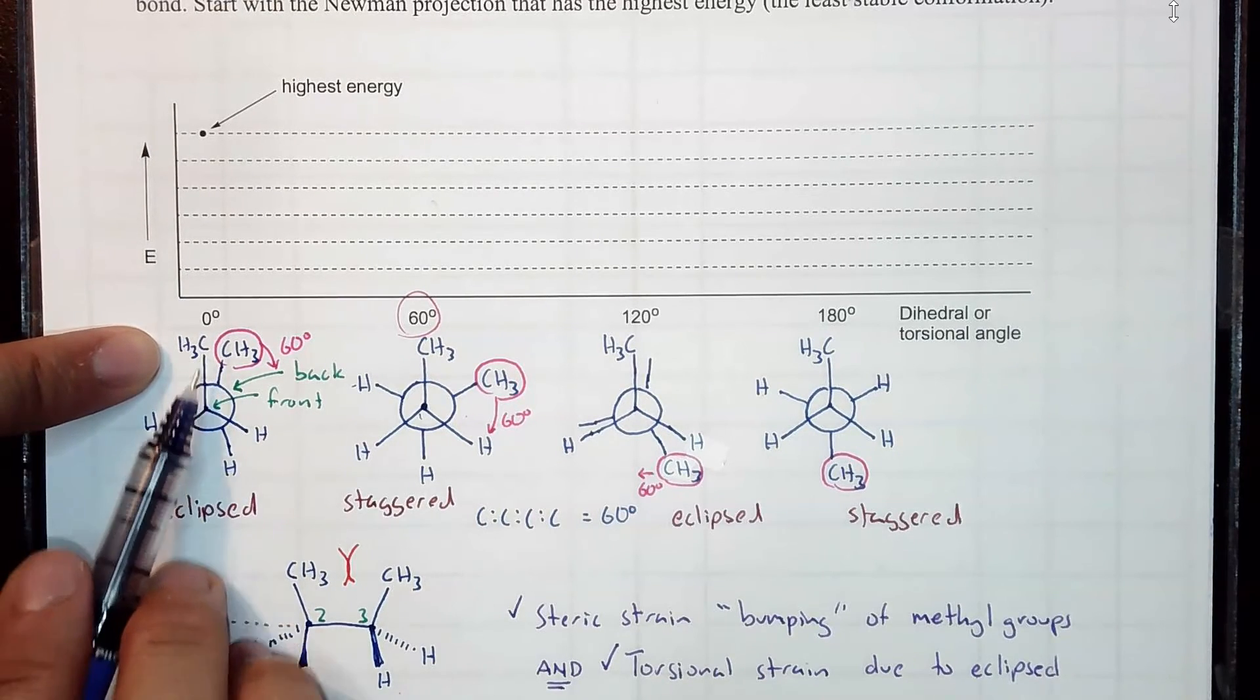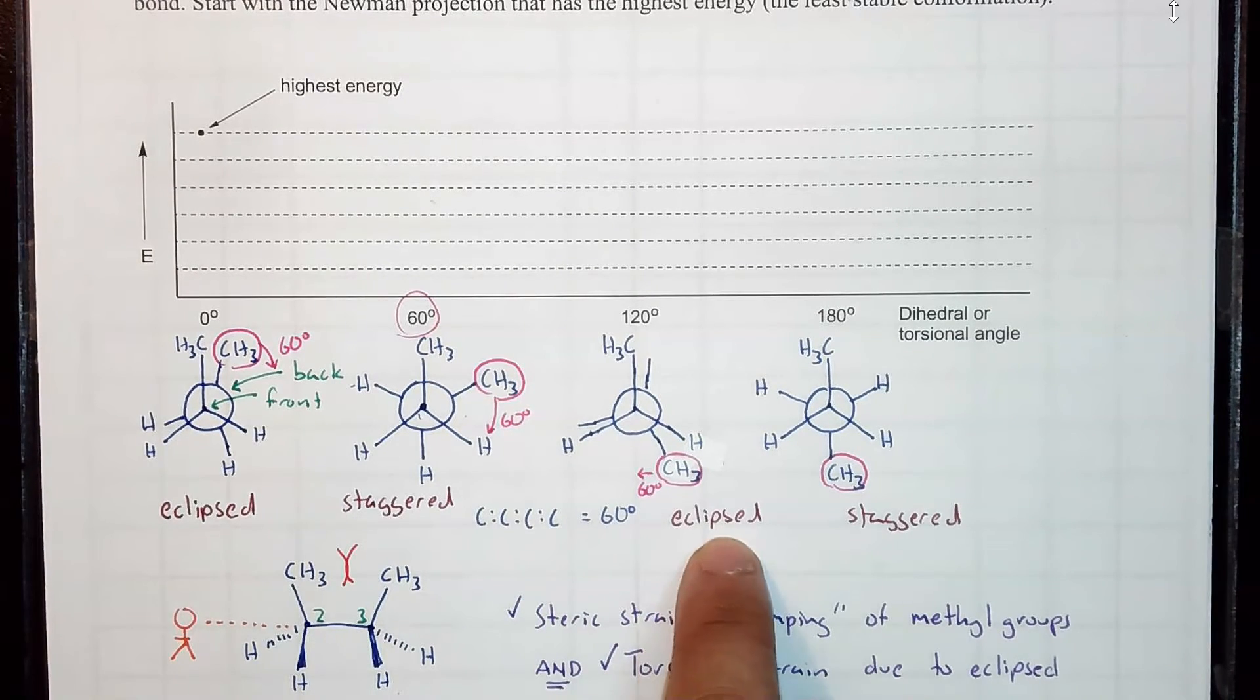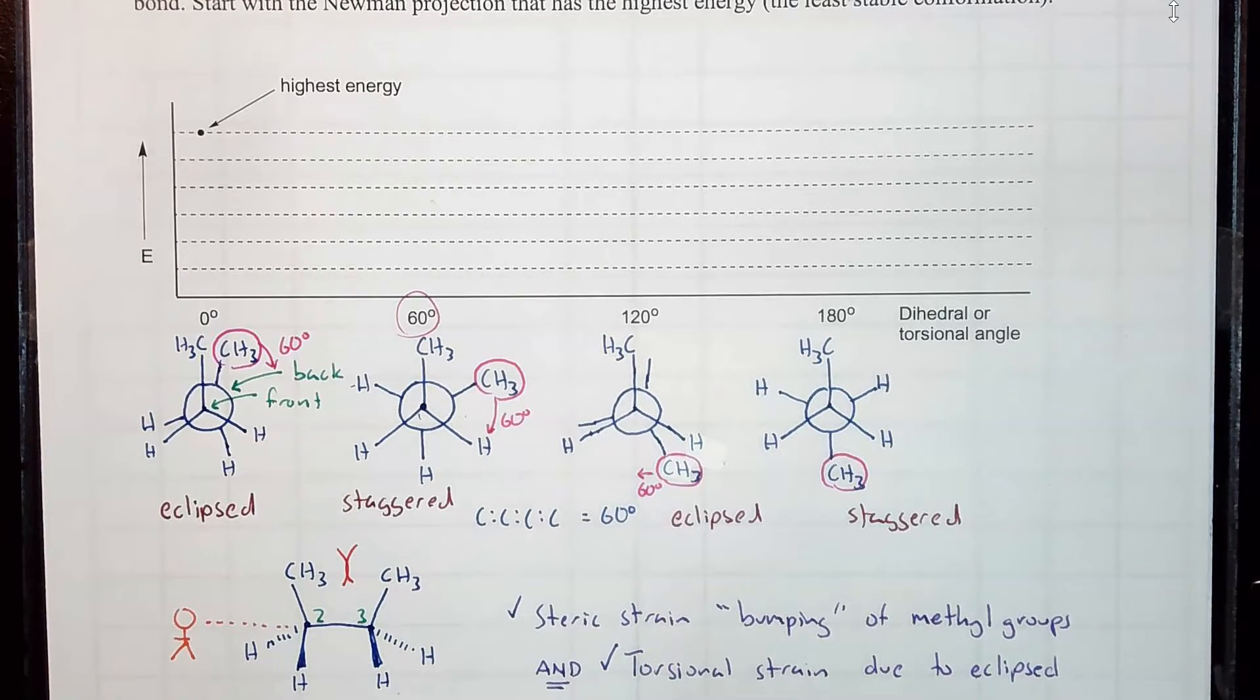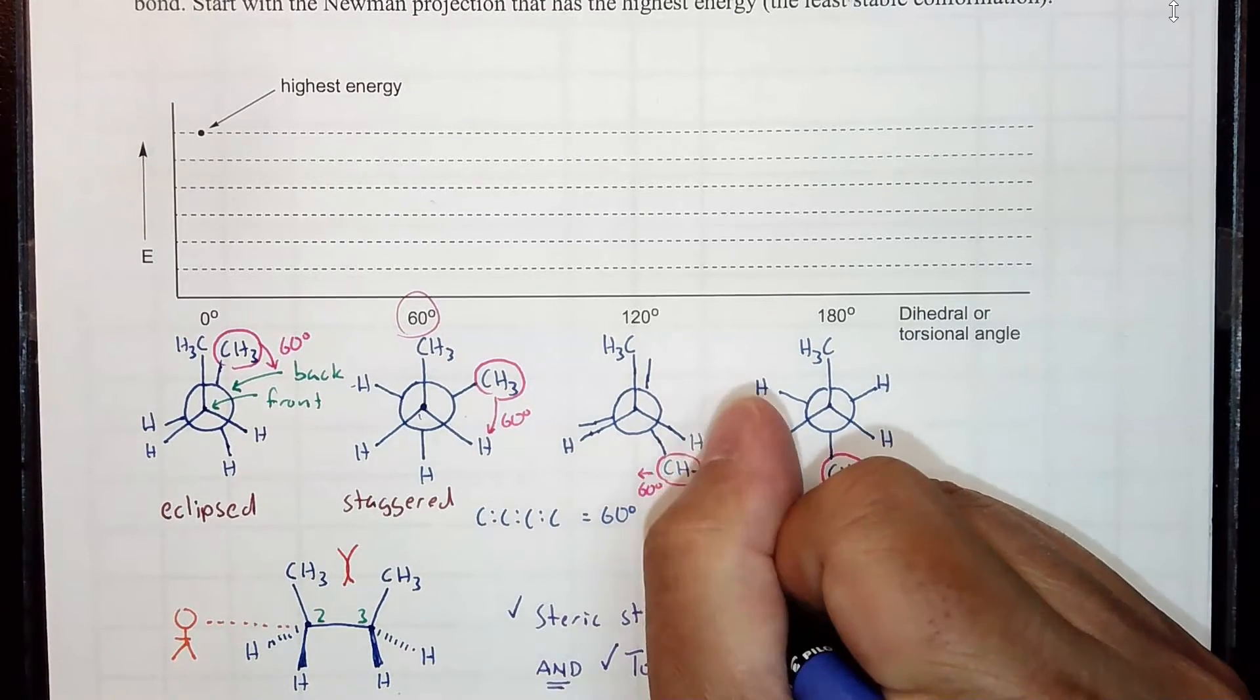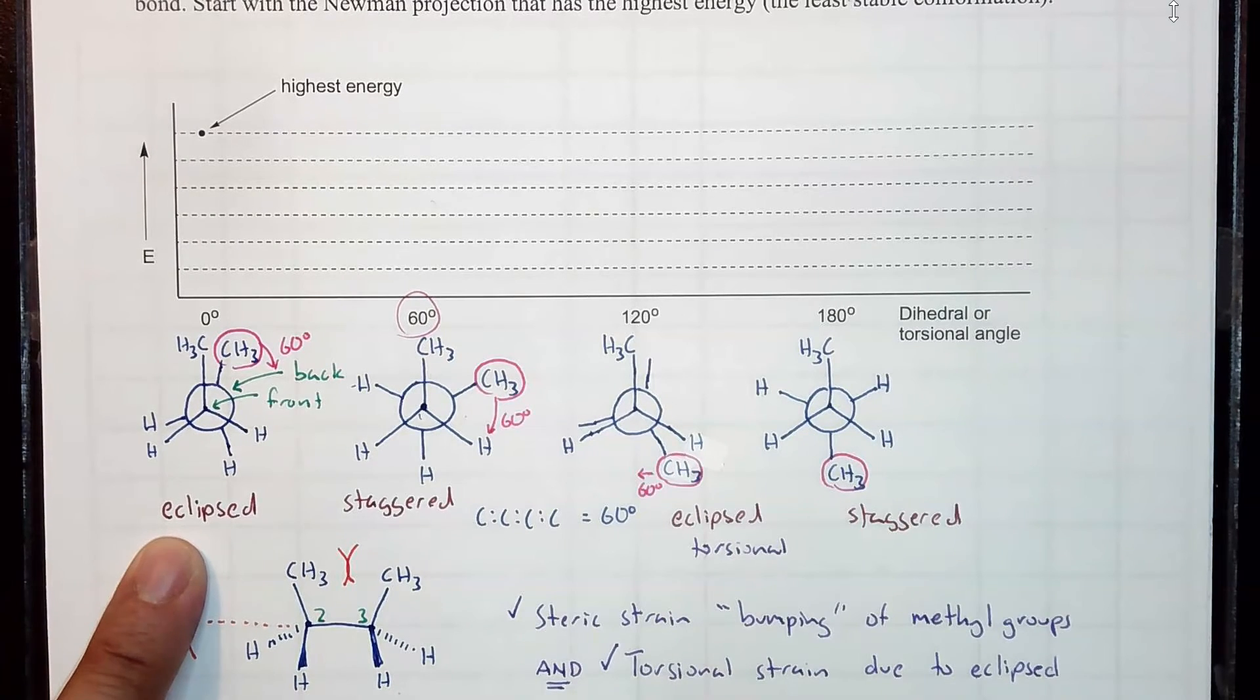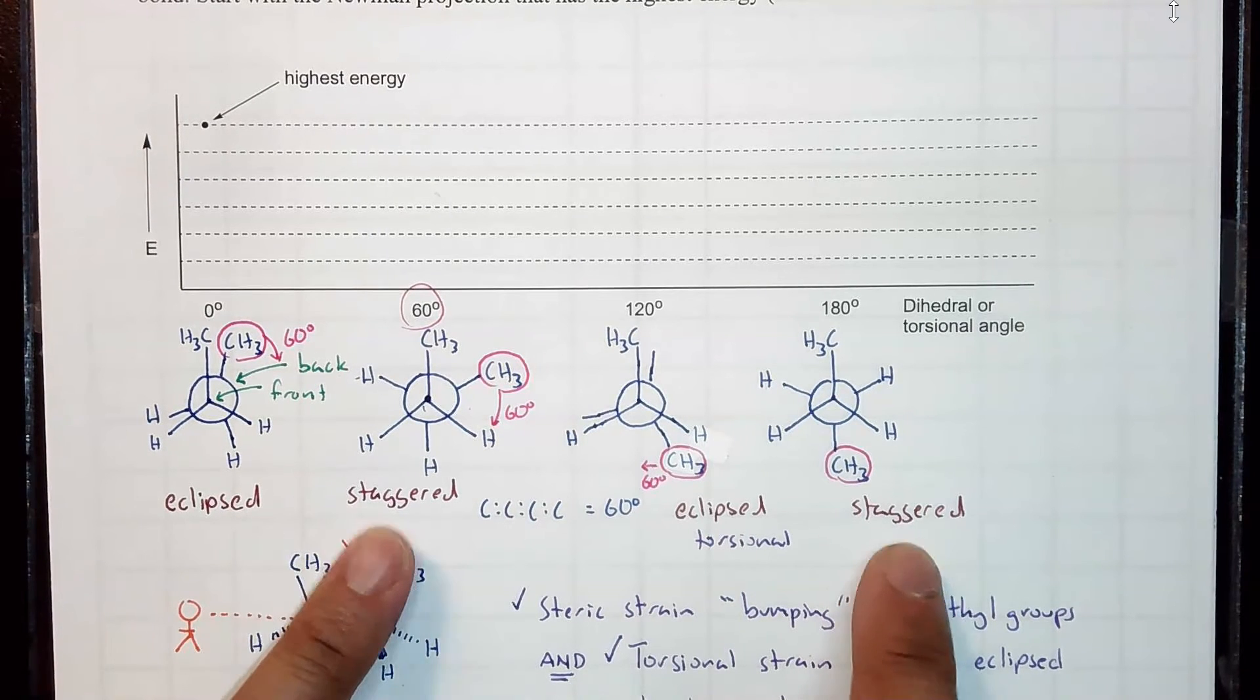Well, we already mentioned that we have steric strain and torsional strain for this first conformation that we set at zero degrees. The dihedral angle for the C-C-C-C is zero. Well, what about this eclipsed? Do you notice that the methyl groups are kind of far apart? So really, the main strain here is not bumping strain, but it's torsional. See, that's a small hydrogen, so we're not going to get much bumping strain or steric strain. This will have torsional strain only. See the difference? This eclipsed has torsional and steric. This one only has torsional.